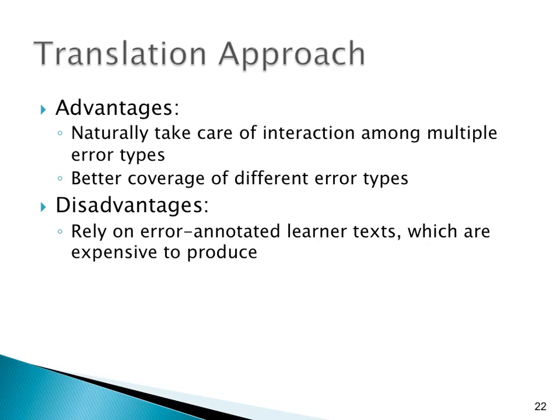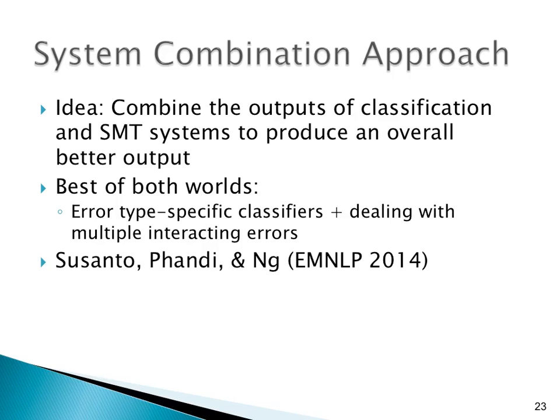The disadvantage of the translation approach is that it relies on error-annotated learner texts, which are expensive to produce. My team at NUS has recently proposed a system combination approach, where the idea is to combine the outputs of the classification approach and the translation approach to produce an overall better output. This approach uses machine learning to select fragments of correction from the two approaches and combine them as the final output, trying to leverage both error-type-specific classifiers and the ability to deal with multiple interacting errors.